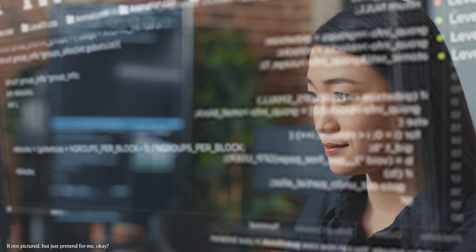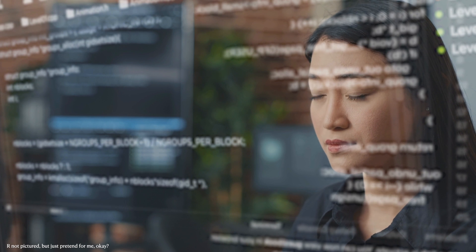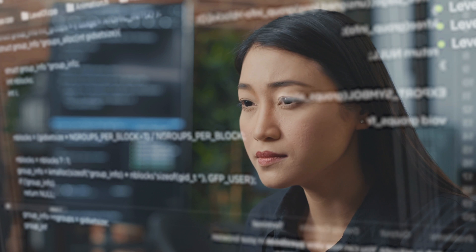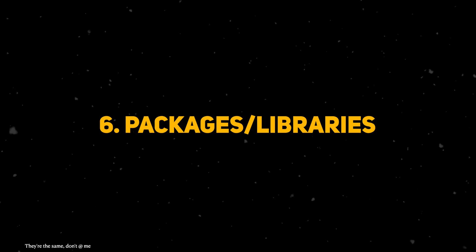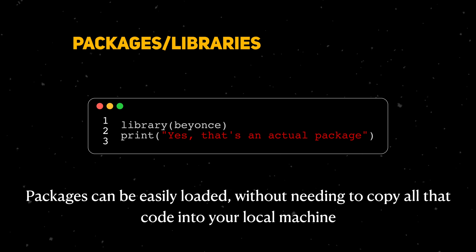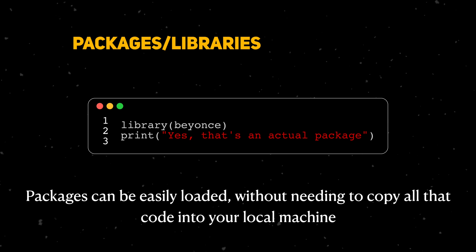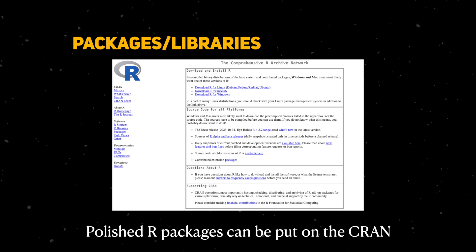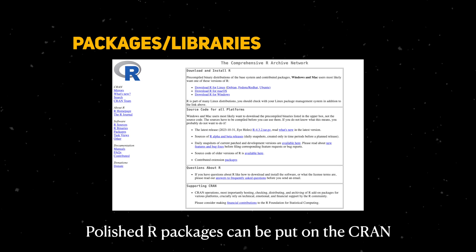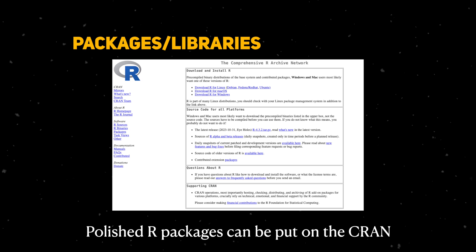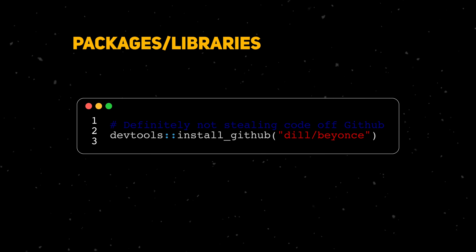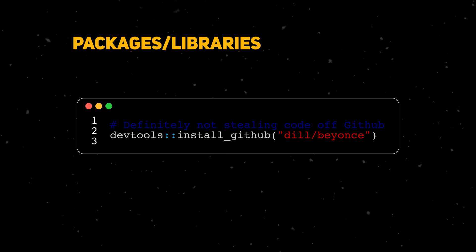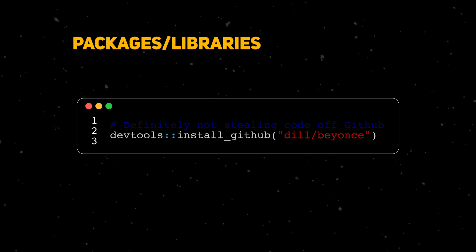Lots of people program in R and many of them have developed useful bits of code. Rather than keep it to themselves, people can share code by creating packages. Packages are collections of data and functions that others can easily load and use. Packages can be stored and downloaded from the Comprehensive R Archive Network, or CRAN, which is R's central software repository supported by the R Foundation. People can also download others' code on GitHub, which is where you can keep pet projects and unpolished code.